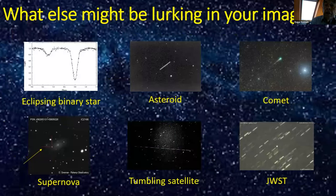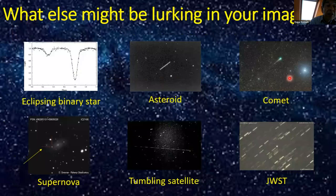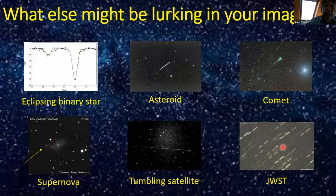Some of the other objects which might turn up in your images include eclipsing binaries and asteroids — which usually appear as a short streak due to their motion — comets, supernovae and novae, tumbling satellites, and even launches of telescopes such as JWST. So it's always worthwhile examining your images very carefully to see what else might be in there.